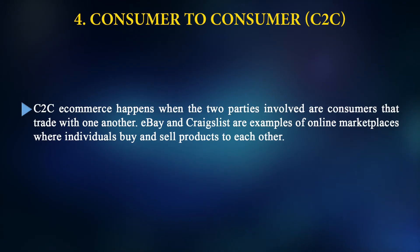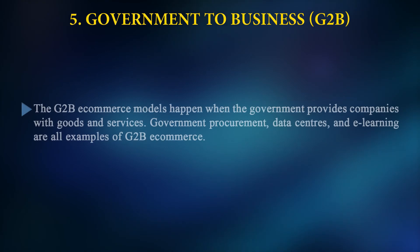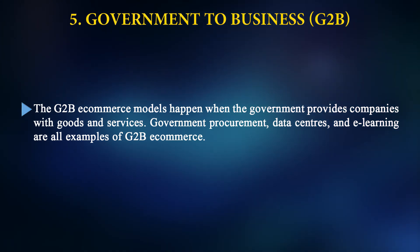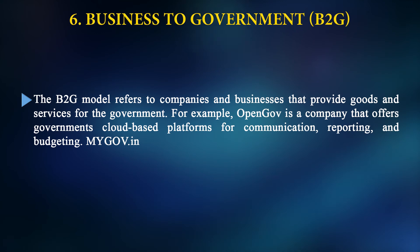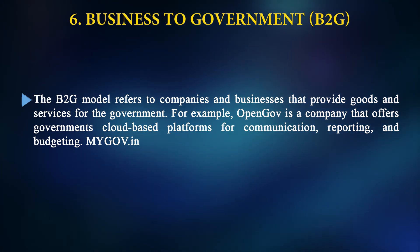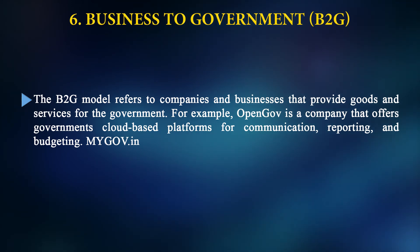Consumer to Consumer (C2C) e-commerce happens when two consumers trade with one another — eBay and Craigslist are examples of online marketplaces where individuals buy and sell products. Government to Business (G2B) e-commerce happens when the government provides companies with goods and services — government procurement, data centers, and e-learning are examples. Business to Government (B2G) refers to companies and businesses that provide goods and services for the government — for example, OpenGov, which offers government cloud-based platforms for communications, reporting, and budgeting. MyGov.in is the official portal of the Government of India, providing facilities like passport making, Aadhaar, PAN card, and other identification services easily accessible online.